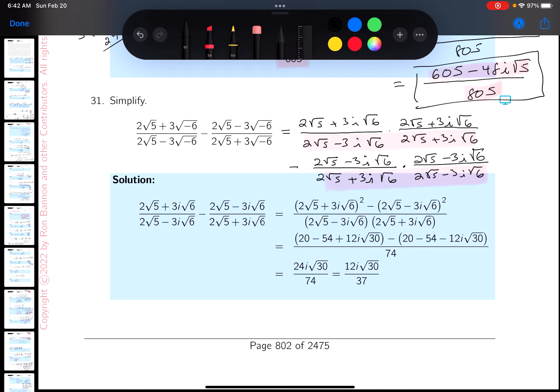You can get 4 times 5, which is 20. And then the middle terms disappear. And then you're going to get minus 9 times 6, 54, i squared, which is minus 1. So you're going to get 74. So I'm going to say that's pretty easy. Both cases, it's 74 in the denominator.